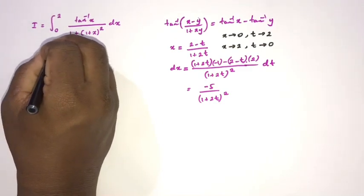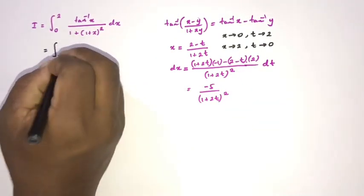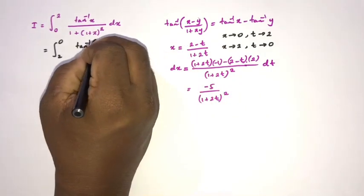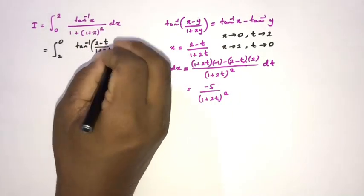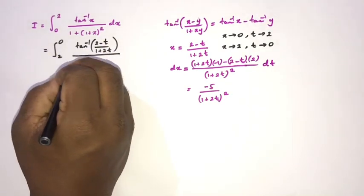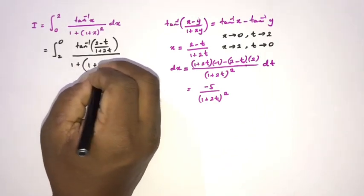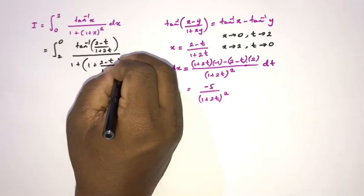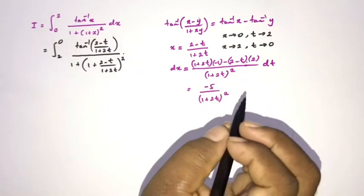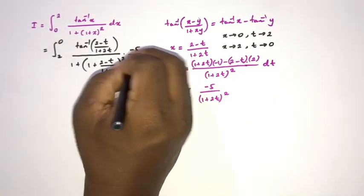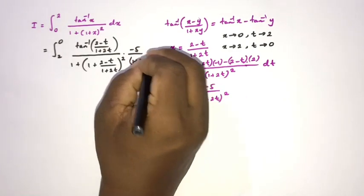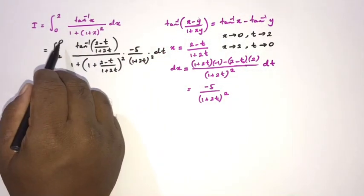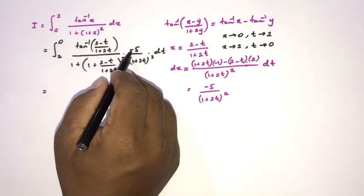Plugging in, the integral becomes: from 2 to 0, inverse tan of (2 minus t)/(1 plus 2t) over 1 plus [(2 minus t)/(1 plus 2t)] squared, times dx which is minus 5 over (1 plus 2t) squared dt.